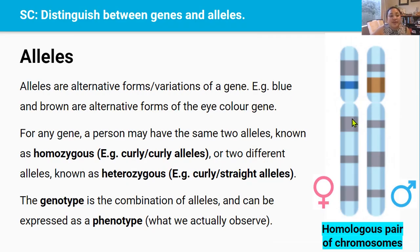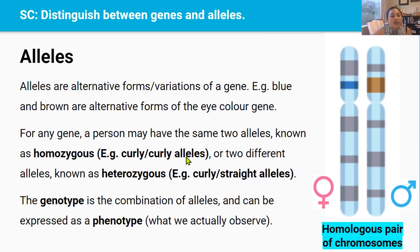These different versions of a gene are called alleles. Alleles are alternative forms or variations of the same gene. For example, eye color is the gene, but blue, green, and brown are the alleles. For any gene, a person may have the same two alleles, known as homozygous — for example, two curly alleles — or they could have two different alleles, which is known as heterozygous, such as one curly and one straight allele.